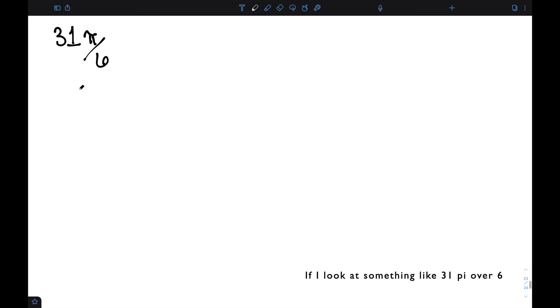If I look at something like 31 pi over 6, we can see that this is bigger than 2 pi. So I'm going to subtract out 2 pi, or 12 pi over 6. When I do, that gets me 19 pi over 6.